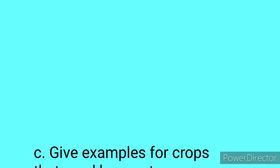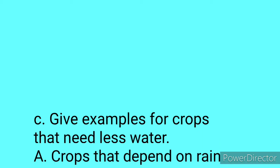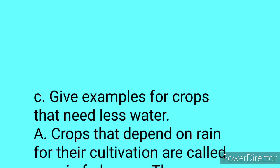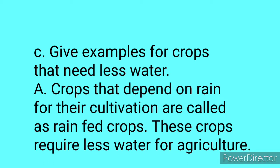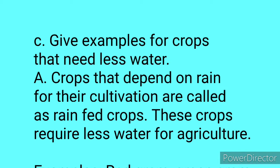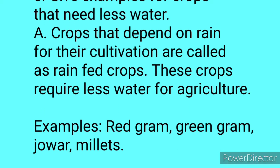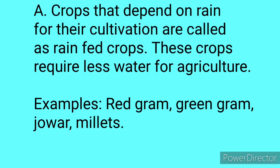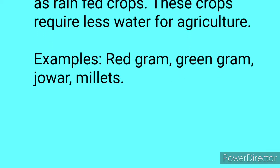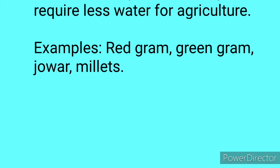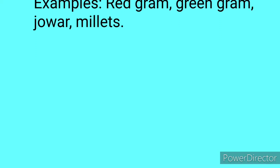Next C: Give examples for crops that need less water. Crops that depend on rain for the cultivation are called rain-fed crops. These crops require less water for agriculture. Examples: red gram, green gram, jowar, and millets.